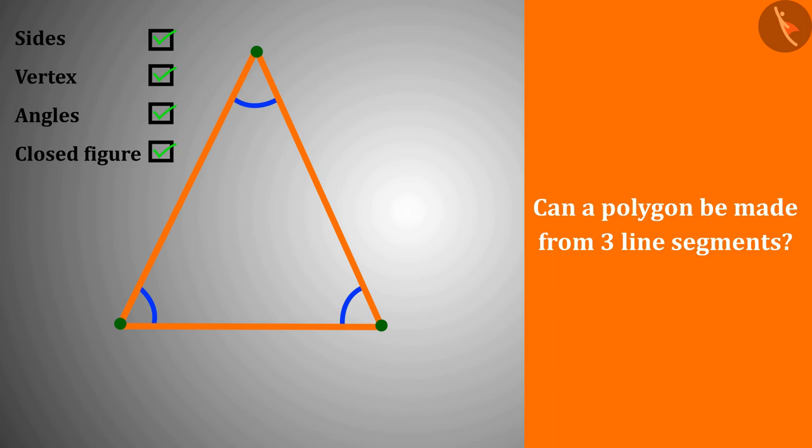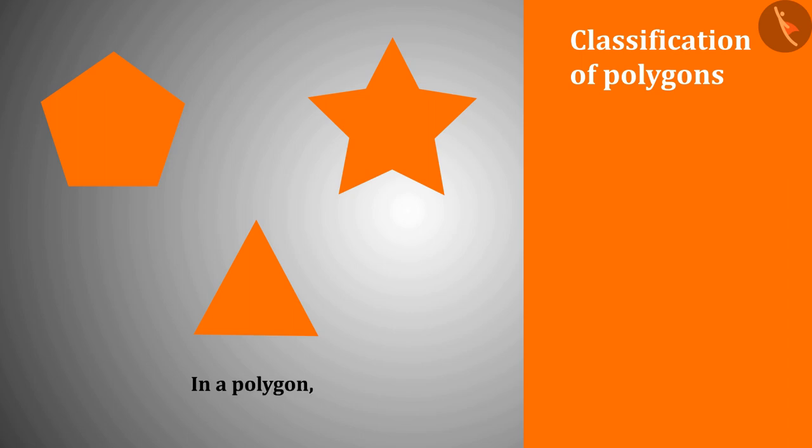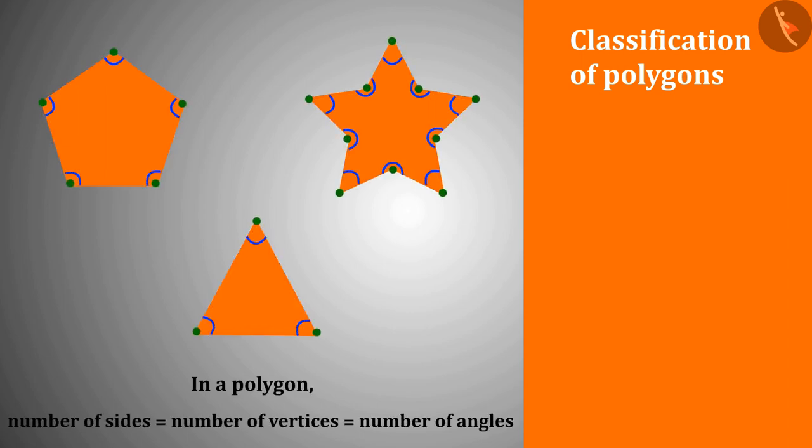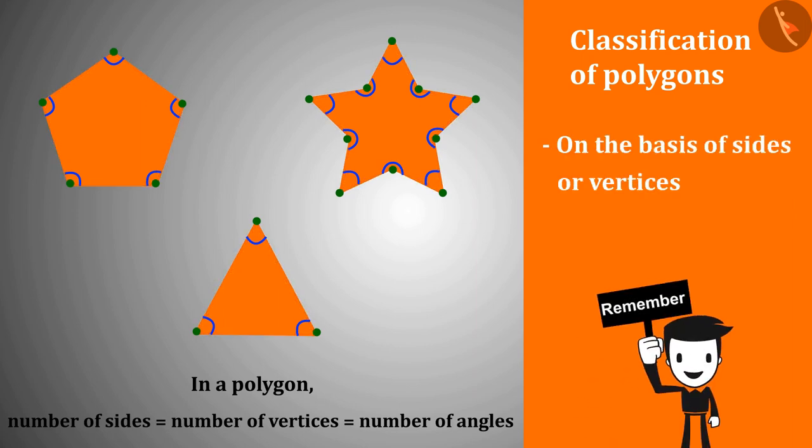In this way, we can make a polygon by joining three or more than three line segments. If we pay attention to the polygons, we find that the number of sides, vertices, and angles in each polygon are equal. On the basis of sides or vertices we classify polygons.